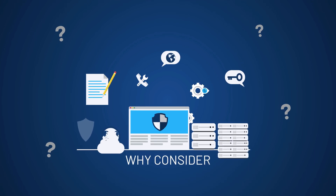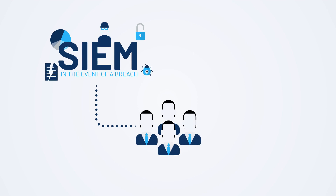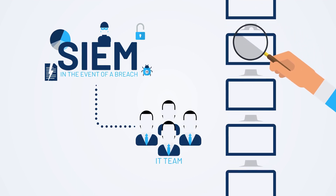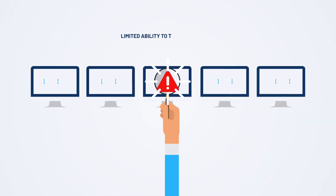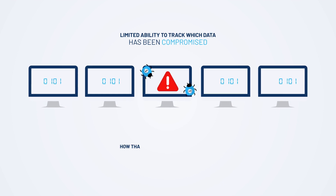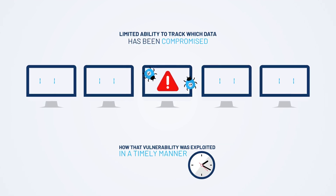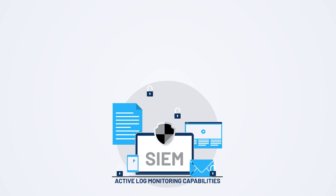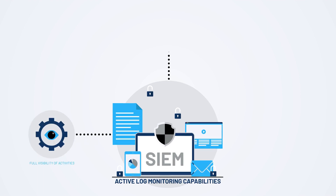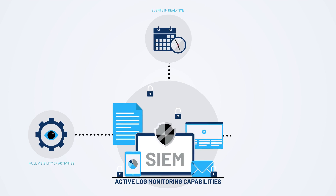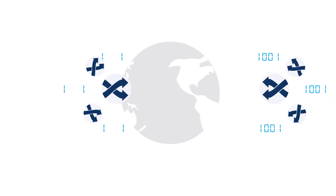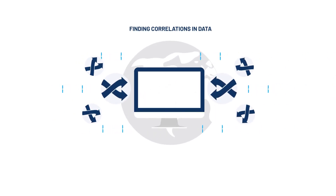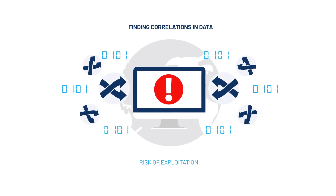So why consider SIEM for your business? Without SIEM software, in the event of a breach, your IT team would need to manually search every individual log from each device to identify the threat. They would have a limited ability to track which data has been compromised and how that vulnerability was exploited in a timely manner. SIEM's active log monitoring capabilities provide full visibility of activities and events in real-time, and create notifications when suspicious activities occur, by finding correlations in data received from various endpoints that lead to risk of exploitation.